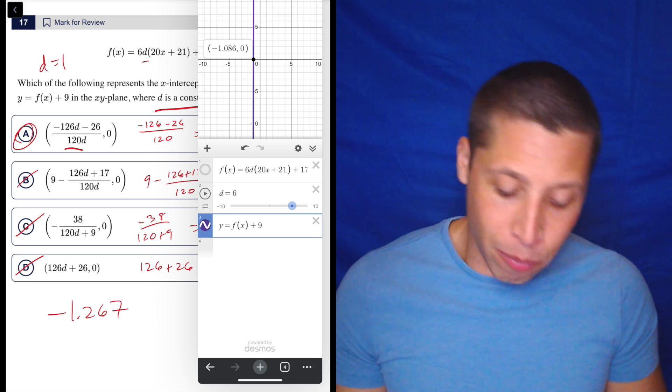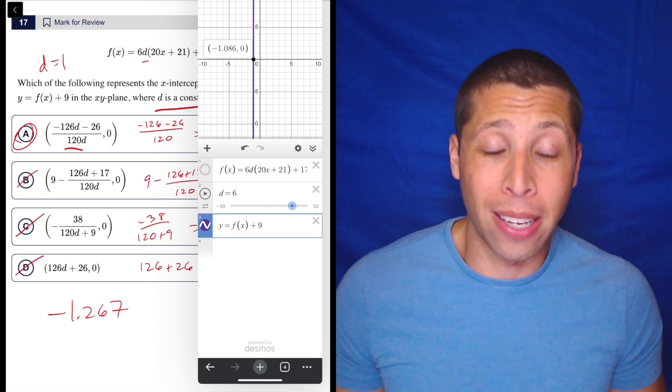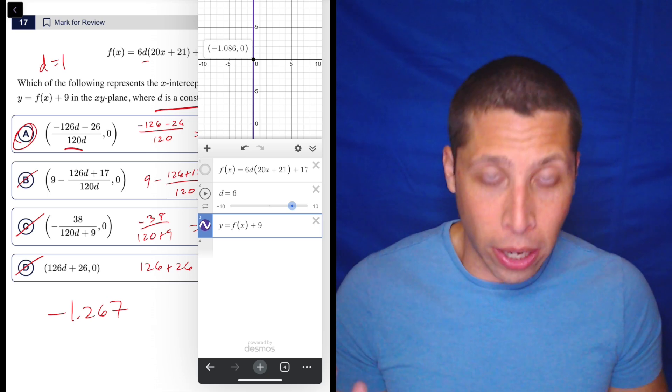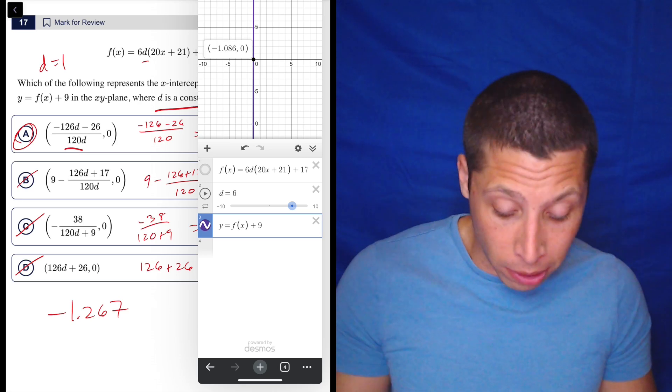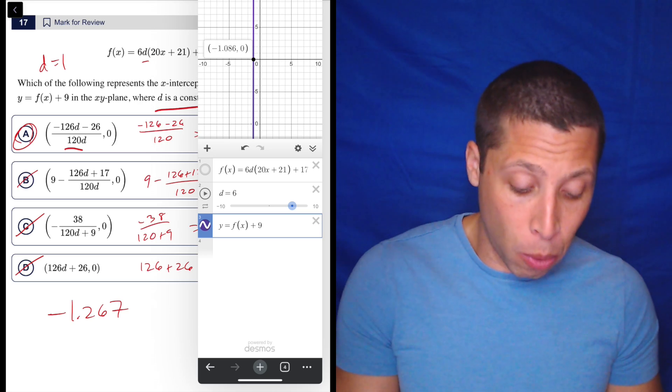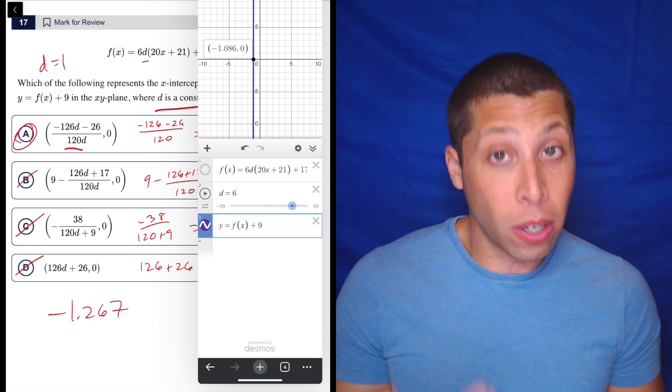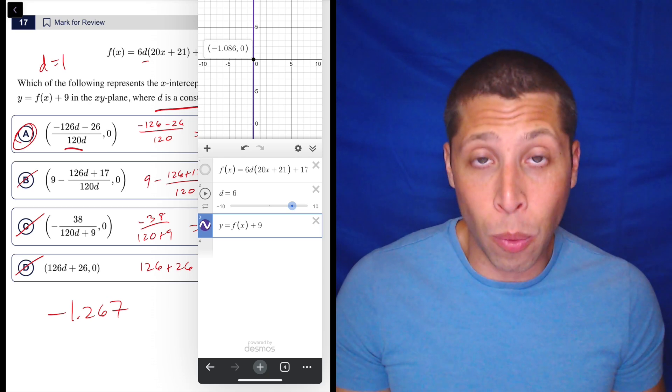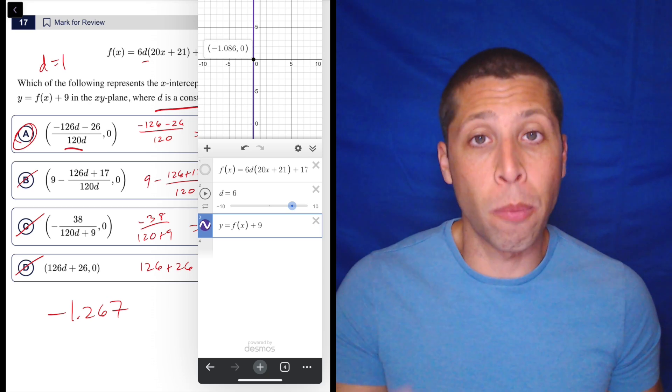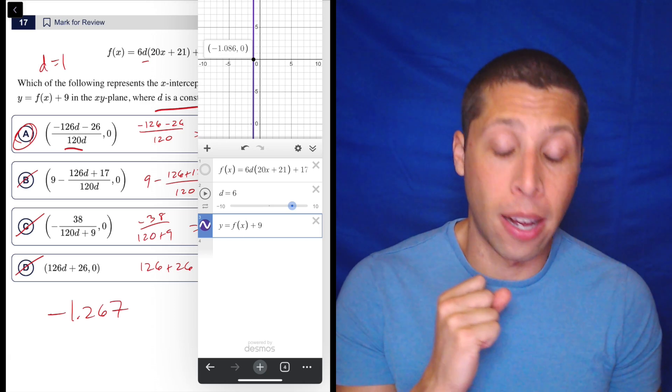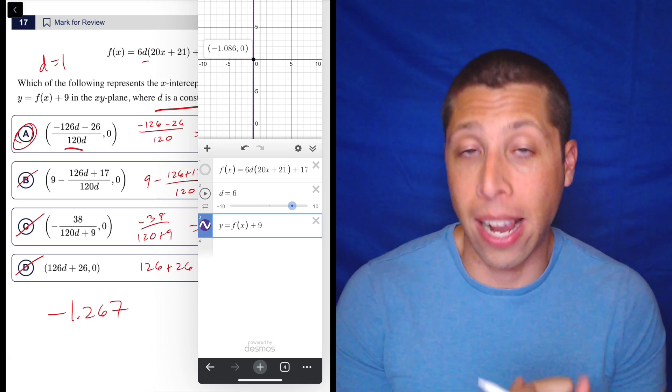And then we'd have maybe some more annoying things to plug into our answer choices. But you know, you could. You could have typed all of these answer choices as points into Desmos. I think that would have been very time consuming. You could have done that with the D as well. And you would have seen little points on this graph. And only one of them would have been exactly where the purple, in this case, crosses the x axis.